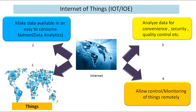Going forward, any device that costs more than 100 dollars will be enabled for internet — they will have computing power, processing power, some sensors, and a lot of intelligence built in. This will allow us to control and monitor things remotely. The biggest challenge is connectivity of all these devices. It is absolutely impossible to have wired connectivity for all surrounding things, so we should go for wireless medium. Depending on the communication range and kind of data they transmit, we may use different kinds of wireless technologies.